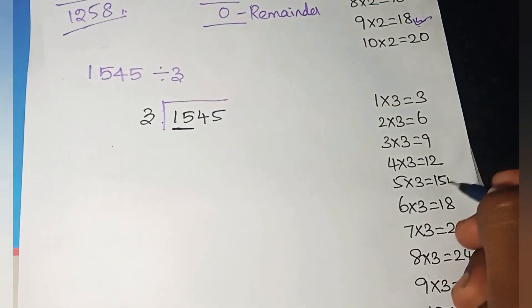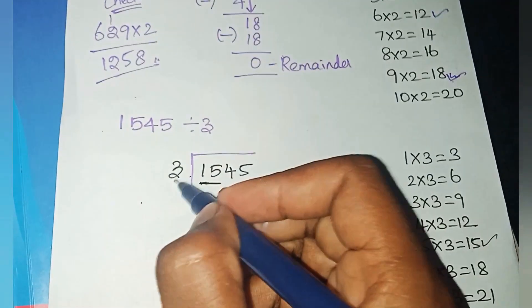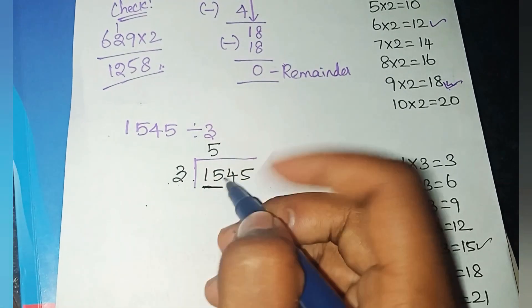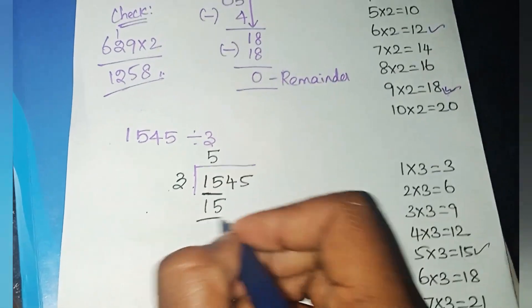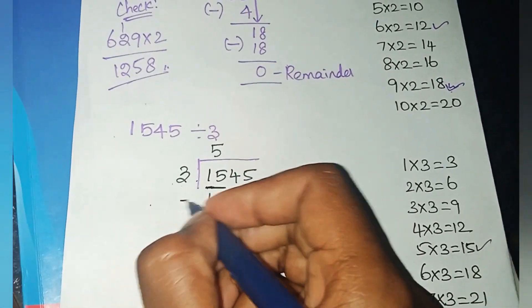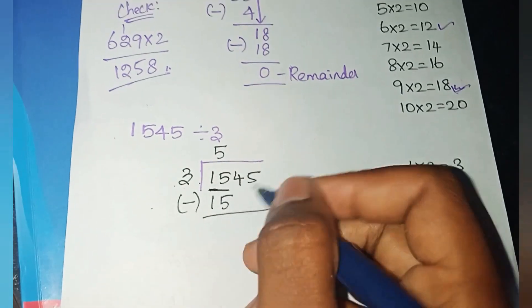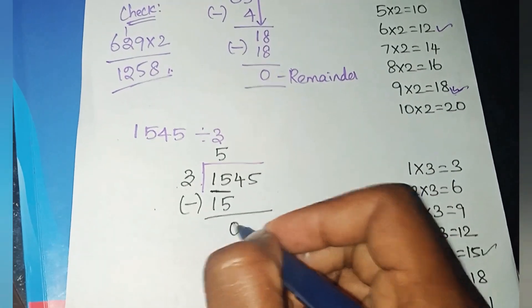How many 3's are 15? 15 is directly in the table. So, 5 into 3 is 15. We get the answer 15. Next step is subtraction: 15 minus 15 is 0.